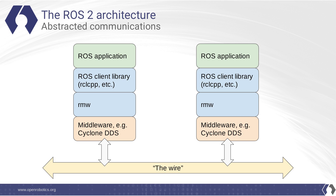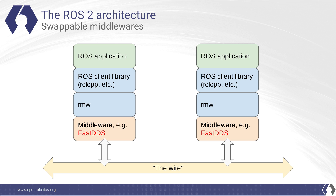The ROS architecture is based around abstracted communications. Looking at this diagram, you can see we have a ROS application which is built on top of a ROS client library — for example, RCL CPP is the C++ client library. That is built on top of what we call the RMW, or ROS middleware layer, which provides an abstract API that interfaces to a middleware. The most commonly used middlewares in ROS are FastDDS and CycloneDDS, and we also see usage of ConnextDDS.